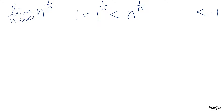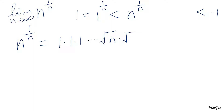So we need an upper bound. Consider n to the power of the reciprocal of n. Now think about n in this way: n obviously equals 1 times 1 times 1 — how many? Well, we can do a square root of n times another square root of n, and then dot dot dot. So we have n minus two ones, and then the square root of n appearing twice, and the whole thing raised to the power of 1 over n.